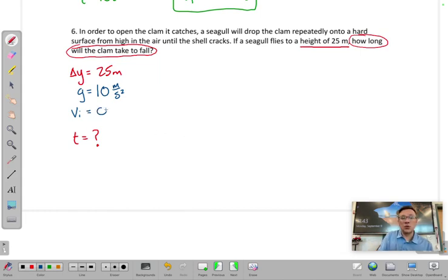So we can make the assumption that the clam was not moving vertically. It was zero meters per second initial velocity. And then once the seagull drops the clam, it starts to speed up. So let's go to our flow chart.